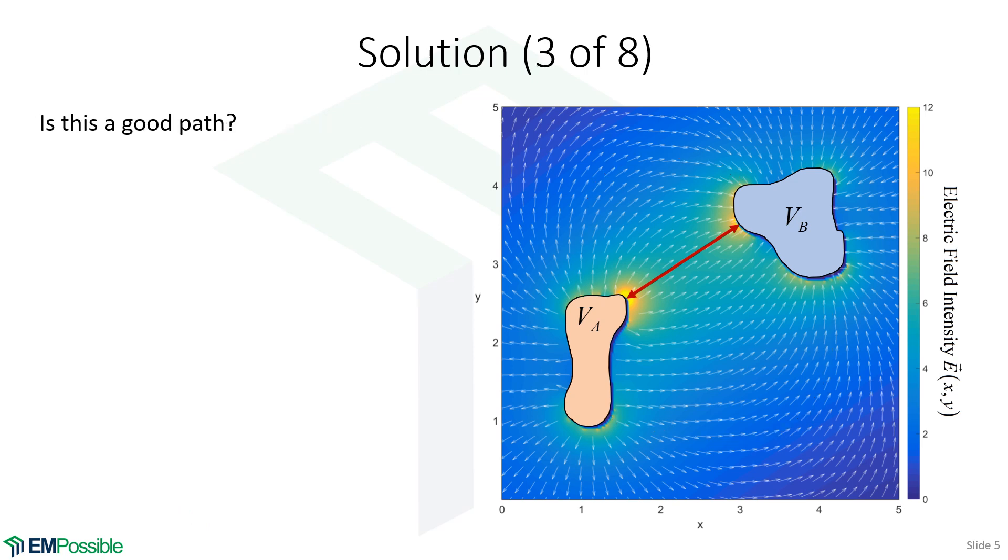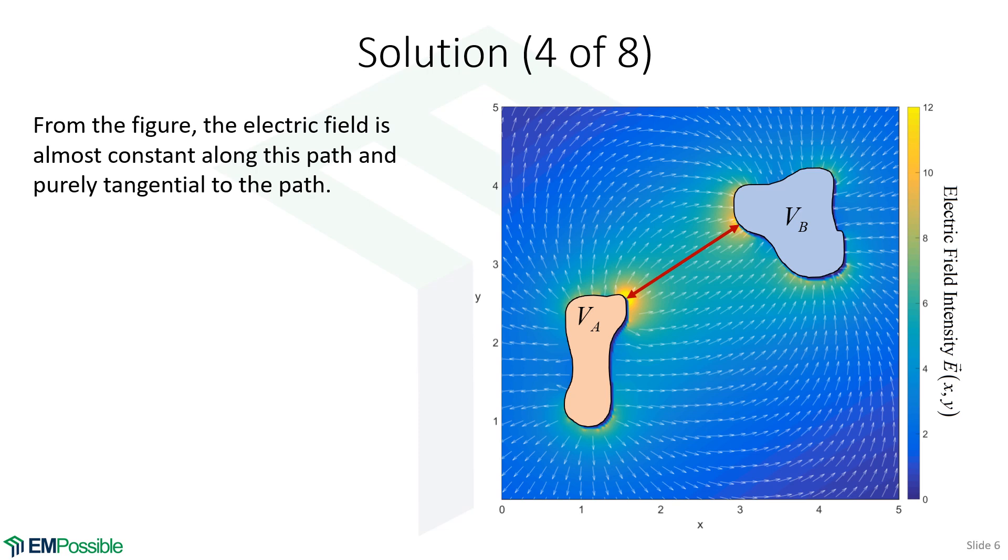So what about this path? Is that a good path? Well, I think it's a pretty good path. The electric field is roughly constant over the whole thing. I know it gets a little bit more intense as it approaches the objects, and it's pretty much tangential the whole way. So I think we can get a pretty good estimate of the potential difference between these two objects using that path.